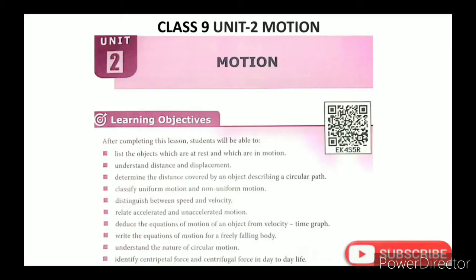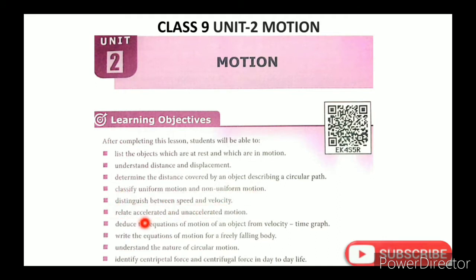Motion. The lesson learning objectives are: List the objects which are at rest and which are in motion. Understand distance and displacement. Determine the distance covered by an object describing a circular path. Classify uniform motion and non-uniform motion. Distinguish between speed and velocity.